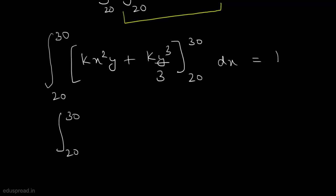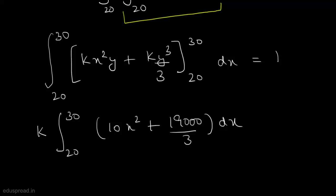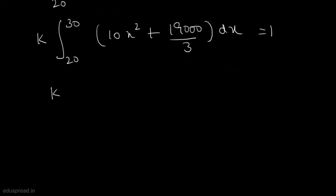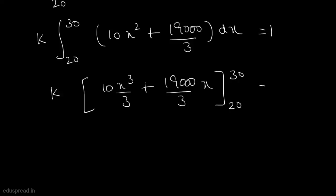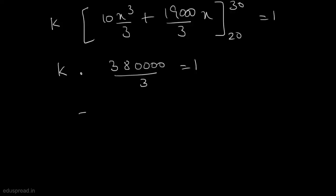After substituting the values of y, and taking k outside, we get the integral from 20 to 28 of k(10x² + 19000/3) dx. Integrating gives k[10x³/3 + (19000/3)x] from 20 to 30, which equals k × 380000/3 = 1. Therefore, k = 3/380000.